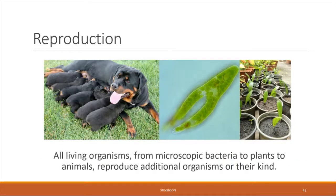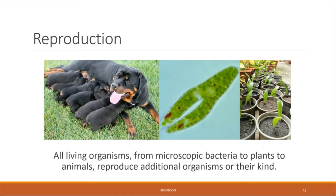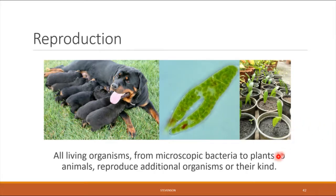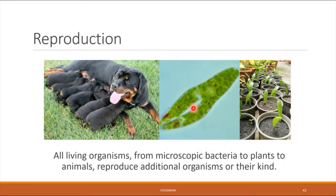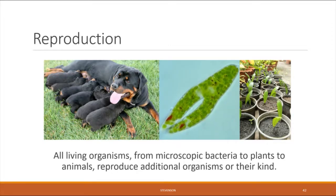Property two: reproduction. All organisms — from large to small — reproduce additional organisms of their same kind. This includes animals, plants, and microscopic organisms. For example, this euglena is developing a cleft because it is undergoing reproduction, splitting straight down the middle so that one cell becomes two.